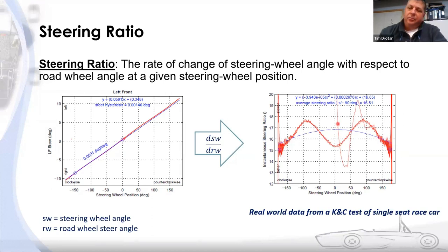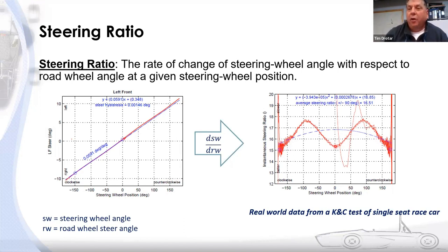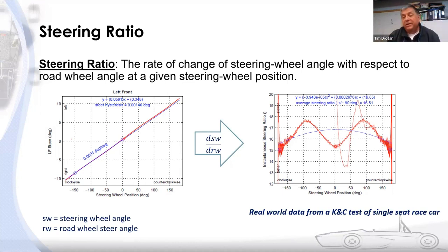There's a second-order polynomial fit through that data because the instantaneous steer ratio is not only a function of the non-uniformity in the upper steering — it's also affected by our lower steering, our plan-view steering geometry, or what you may know as Ackermann. There's some amount of Ackermann steering in this vehicle causing the overall steer ratio to change in a quadratic nature as we turn from straight ahead to the extreme of travel.